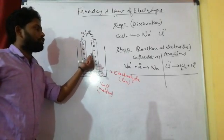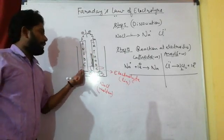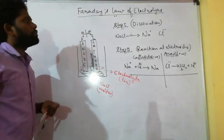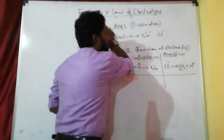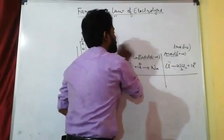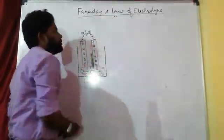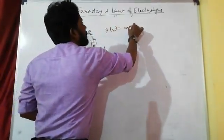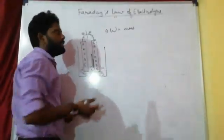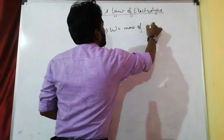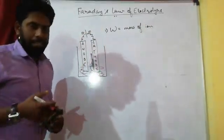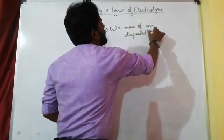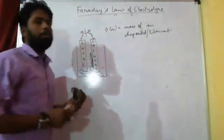Now we observe that there is some mass of sodium deposited at the cathode, and some mass of chlorine released at the anode. According to Faraday's first law, we define W as the mass of the ion — either cation or anion — which is deposited or liberated at the electrodes.